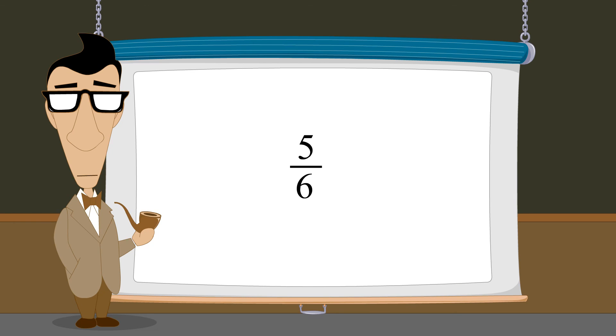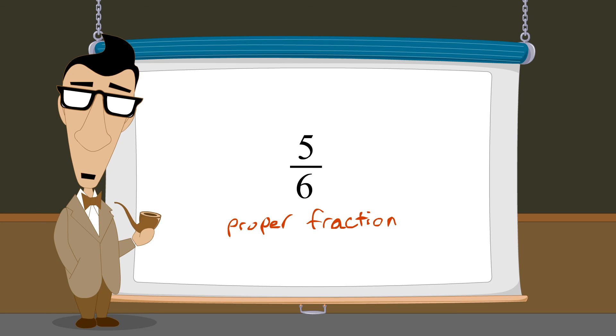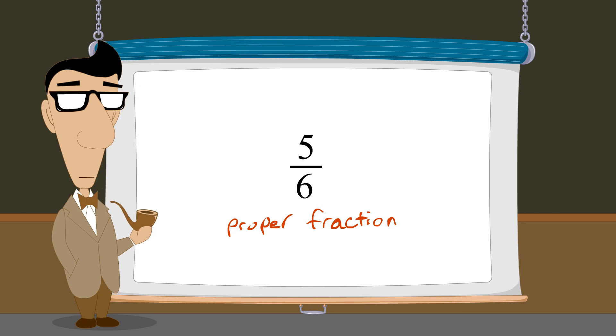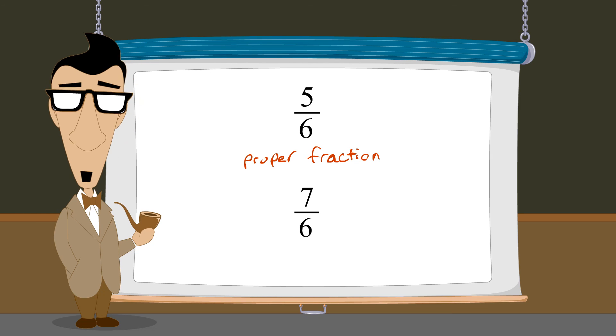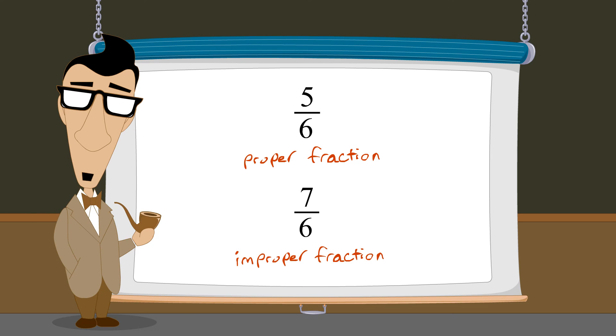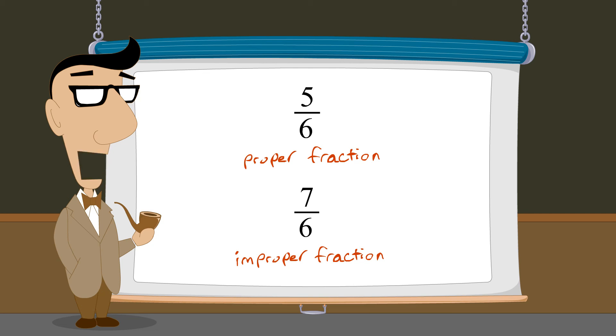The fraction five-sixths is called a proper fraction since it represents a value less than one. However, sometimes arithmetic operations result in fractions greater than one, called improper fractions. In the next lecture, we will learn how to convert these improper fractions to a different form involving an integer plus a proper fraction.